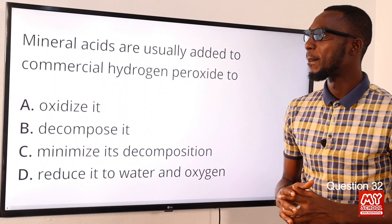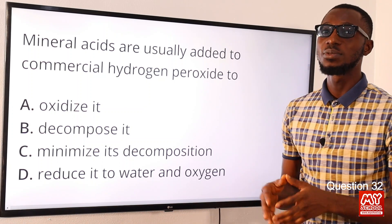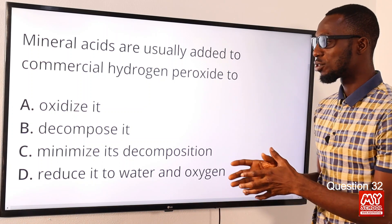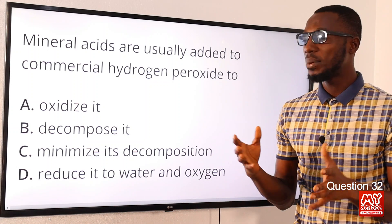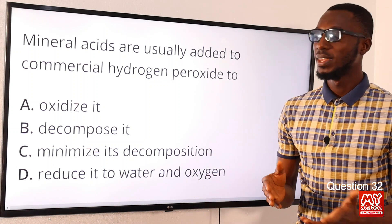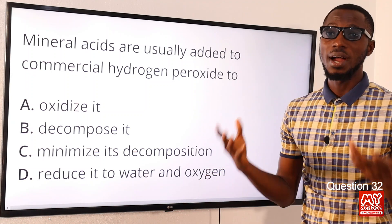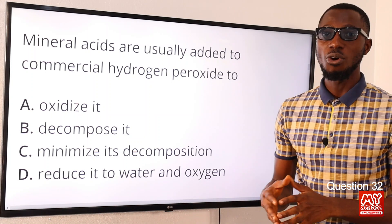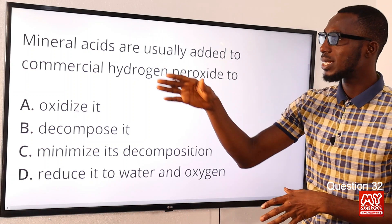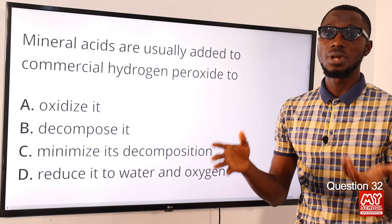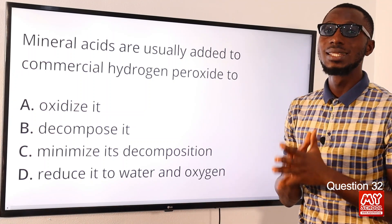Question 32: Mineral acids are usually added to commercial hydrogen peroxide to do what? This is to minimize its decomposition. Normally, when you expose hydrogen peroxide to air it decomposes to give water and oxygen, and this process is accelerated by heating or addition of alkali. To minimize its decomposition, mineral acids are added. The correct answer is option C.